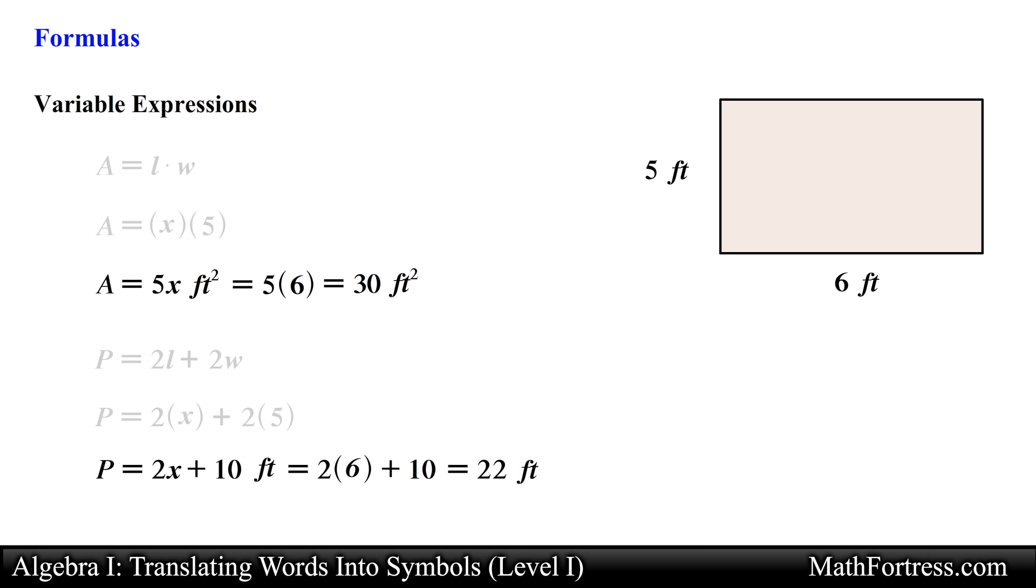In algebra we sometimes don't want to know the exact value like 30 square feet or 22 feet. We just want to know in general what the perimeter and area would equal to given a particular width and any length imaginable. So we use a variable to represent the varying nature of the length.